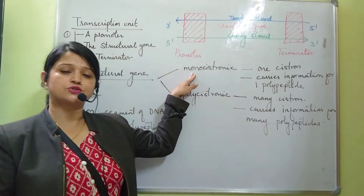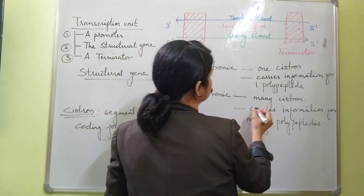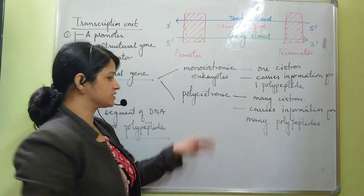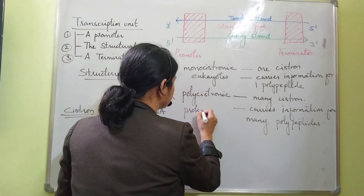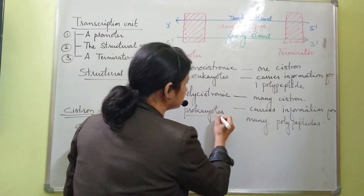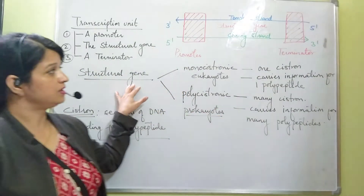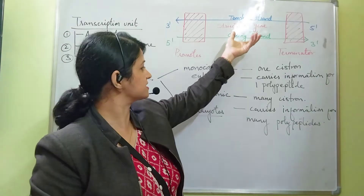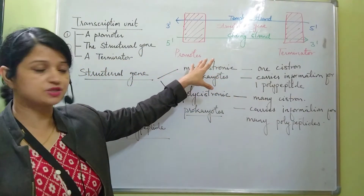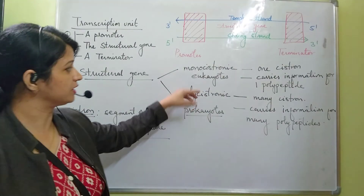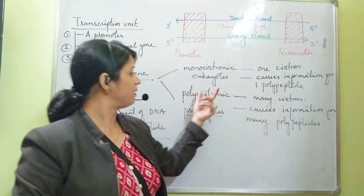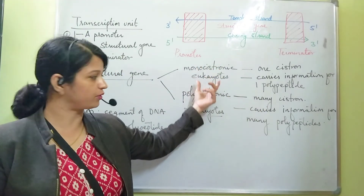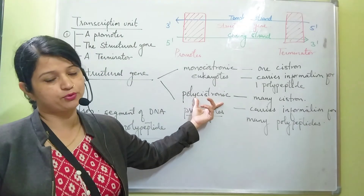The monocistronic structural gene is present in eukaryotes, while the polycistronic structural gene is present in prokaryotes. The structural gene is the segment of DNA required for the process of transcription — it can be monocistronic, containing one cistron, or polycistronic, containing many cistrons.